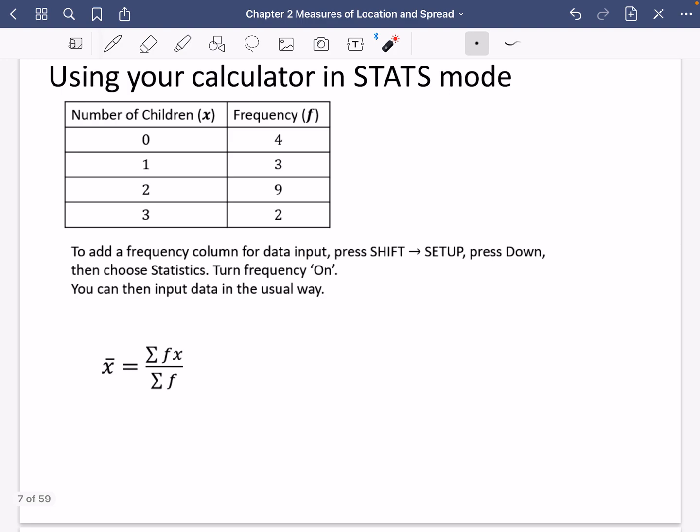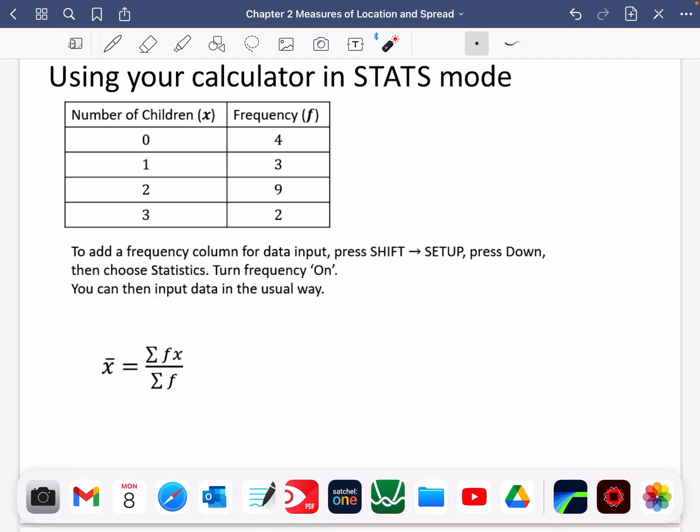There is a couple of things we need to do. We're going to need to add a frequency column for our data input. And I'm going to show you how to do this. So we're going to do it for this one that we've got here. I've got this elsewhere, keep this in front of you so that you can see what it is that I'm doing. So let's just go back to the camera. I'm going to start off with the graphics calculator to begin with.